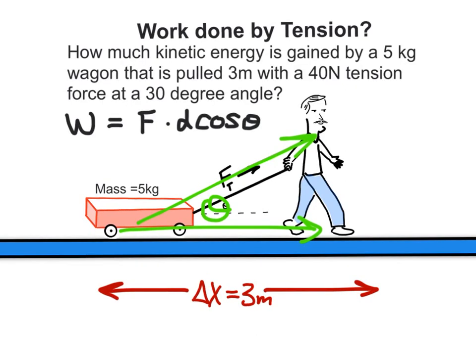So that kinetic energy is from work, which is force times distance times cosine theta, where the effective component of force in the direction of the displacement is going to be 40 times the cosine of 30, turns out to be 34.6 N.